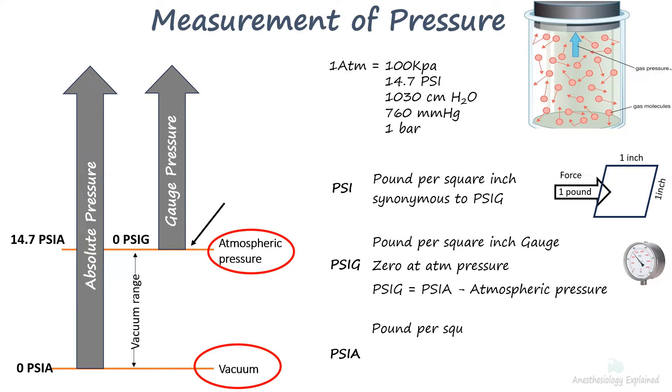PSIA is pounds per square inch absolute. It refers to pressure relative to zero or a perfect vacuum. The PSIA scale starts with zero at a perfect vacuum, the absence of any pressure.